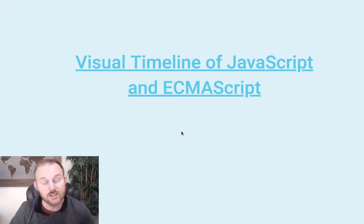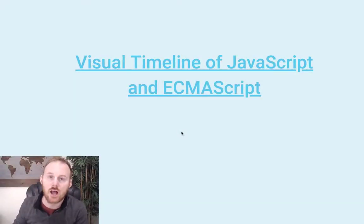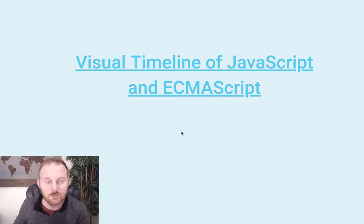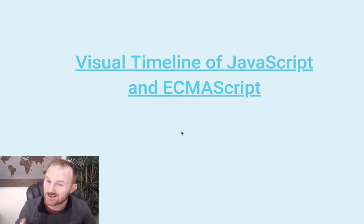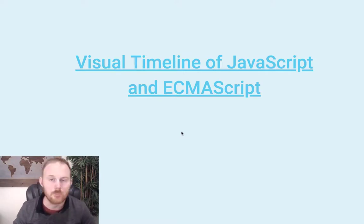This video is an excerpt from a larger course on Udemy. You can find the links in the comments below. This is the super fast version of the visual timeline for JavaScript and ECMAScript. There's a much longer one with lots of detail — I'd encourage you to do that. But this is the super fast version for when you don't have time and just want to see it.